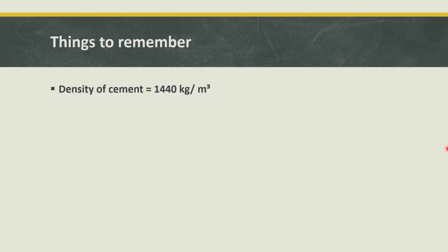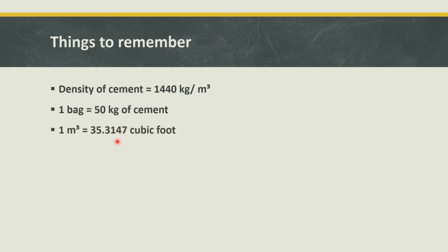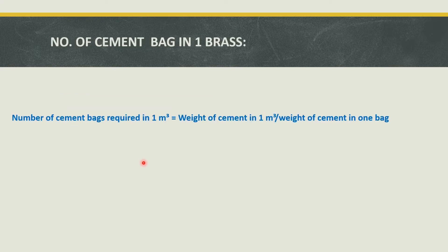The density of cement is 1440 kg per cubic meter, and one bag of cement contains 50 kg of cement. One cubic meter equals 35.314 cubic feet, and one brass equals 100 cubic feet. For ease of calculation, first we will find the number of cement bags in one cubic meter.